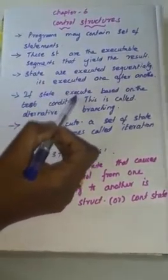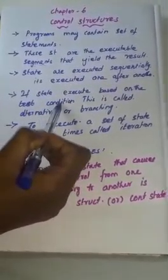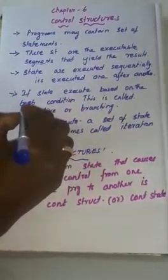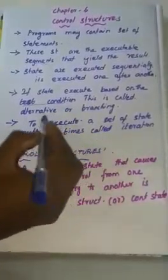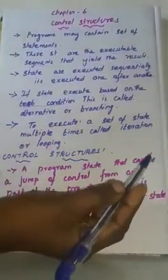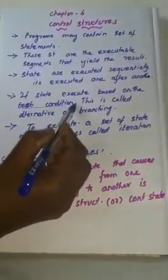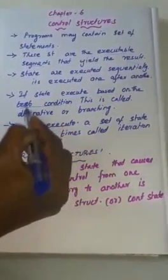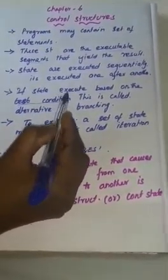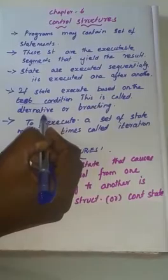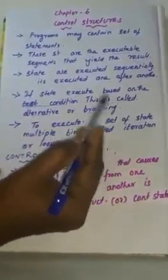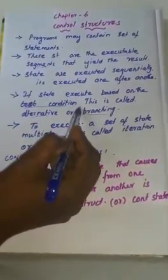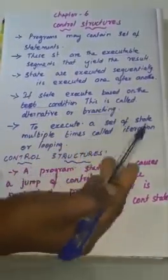If a statement executes based on a test condition — that is, statements are executed based on any one condition — this is called an alternative or branching statement.